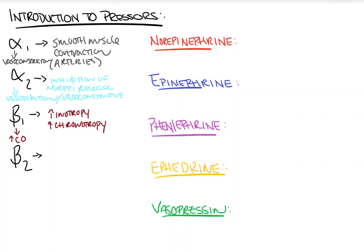Beta-2 receptors are located on the bronchial smooth muscles as well as the smooth muscles around blood vessels. Activation results in vasodilation and bronchodilation via smooth muscle relaxation — bronchioles more so than blood vessels. Quick basic review: alpha-1 vasoconstricts; alpha-2 vasoconstricts a bit and dilates a bit; beta-1 increases heart rate and squeeze strength; beta-2 relaxes smooth muscle and vasodilates, although weakly on vessels, more so on the airway.